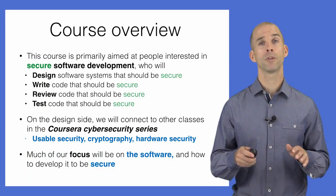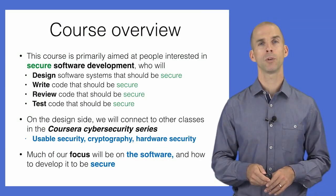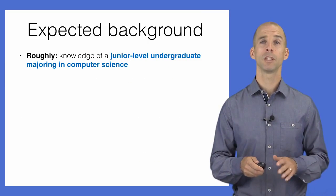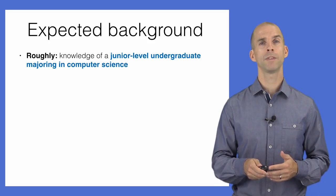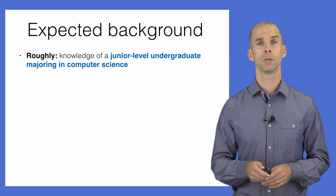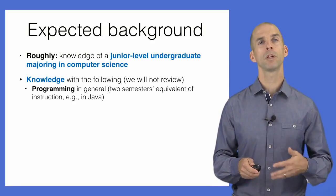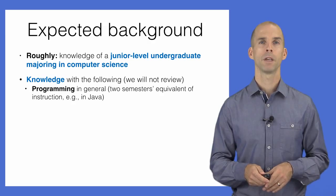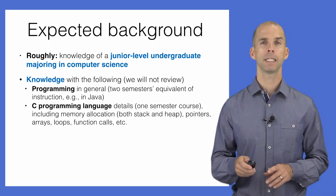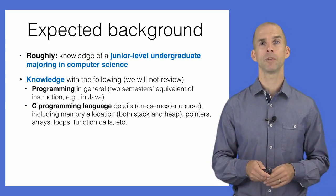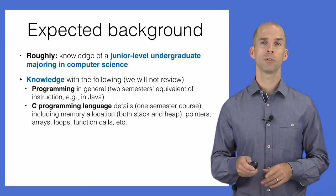Much of the focus will be on the core activities of building software: designing its architecture, writing its code, and testing that the code is secure. Students should have the equivalent background of a third-year university computer science student. More specifically, participants should have experience writing code equivalent to three semester-long programming courses. Two might cover high-level languages like Java, Ruby, or Python, but at least one should cover low-level programming in C and C++.